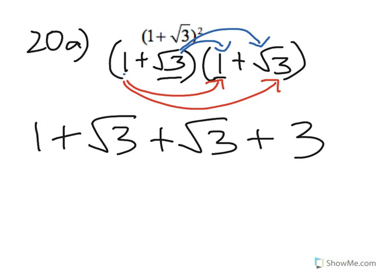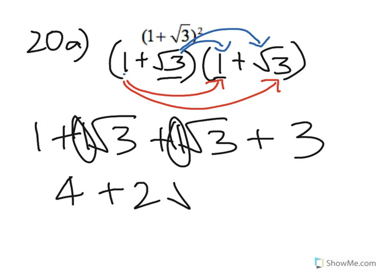Combining terms: 1 plus 3 gives 4, and √3 plus √3 gives 2√3. So the answer is 4 plus 2√3, where A is 4, B is 2, and there's your √3.